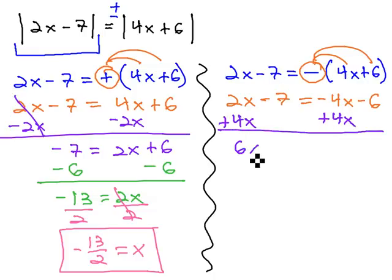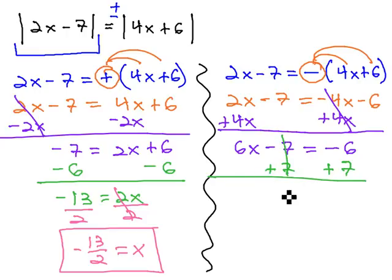As we do this, we get 6x minus 7, and the 4x and negative 4x subtract out to 0 equals negative 6. Now we have a two-step equation, where we can add 7, giving us 6x equals 1. And finally, dividing both sides by 6, we get our second solution for x of 1 sixth.